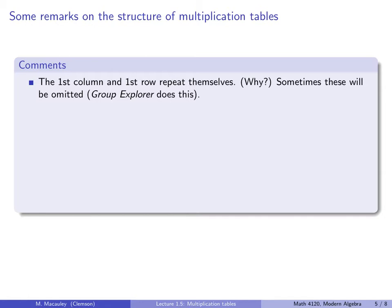Some remarks on multiplication tables. The first comment is that the first column and the first row repeat themselves. Why is this? Because the first entry in the previous table was just the identity. So you don't really need that row or column. It doesn't tell you anything. You know how to multiply things by the identity. Sometimes these things will be omitted. There's a nice program called Group Explorer, which is freely available online and was made in conjunction with the Visual Group Theory book.